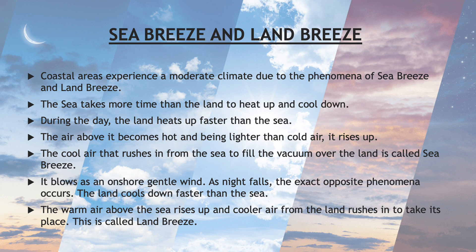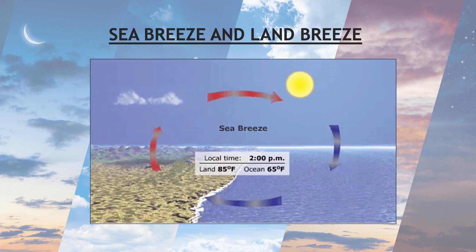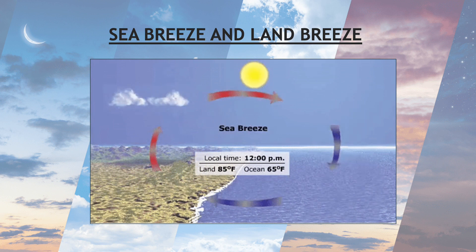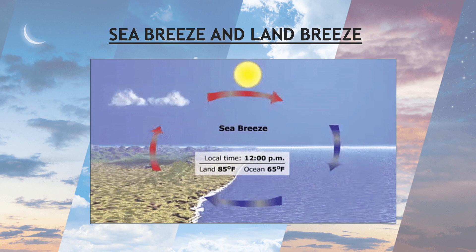As night falls, the exact opposite phenomena occurs. The land cools down faster than the sea. The warm air above the sea rises up and cooler air from the land rushes in to take its place — this is called land breeze. Basically, a sea breeze is any wind which blows from a large body of water towards the land mass. It occurs at daytime while land breeze occurs at night.